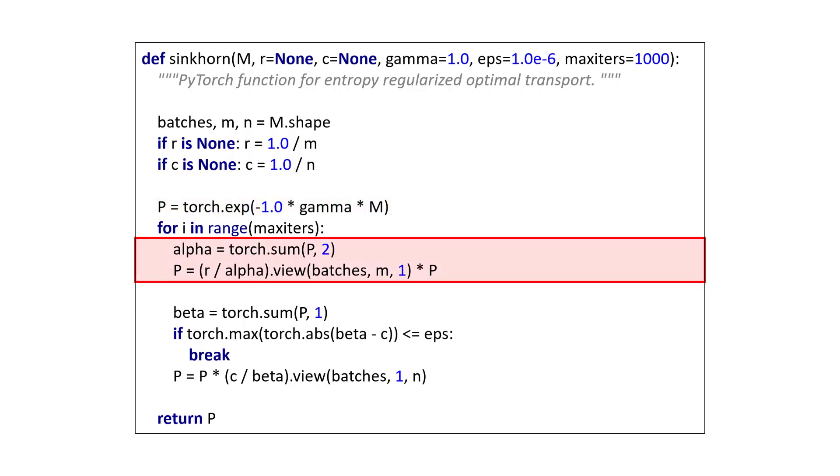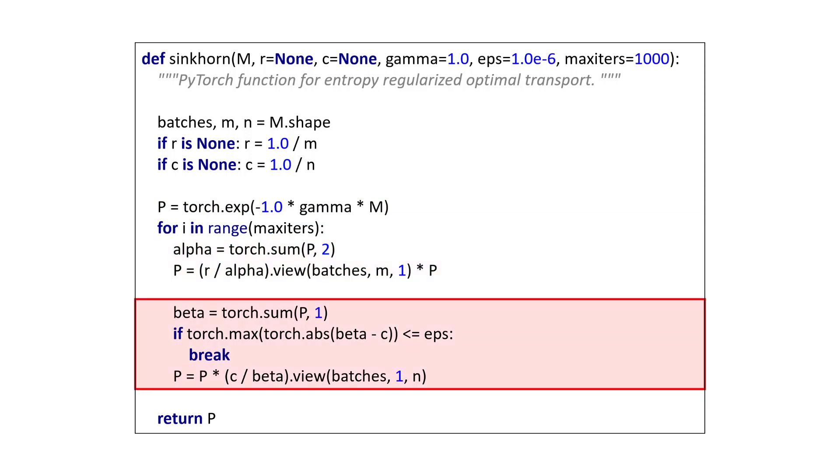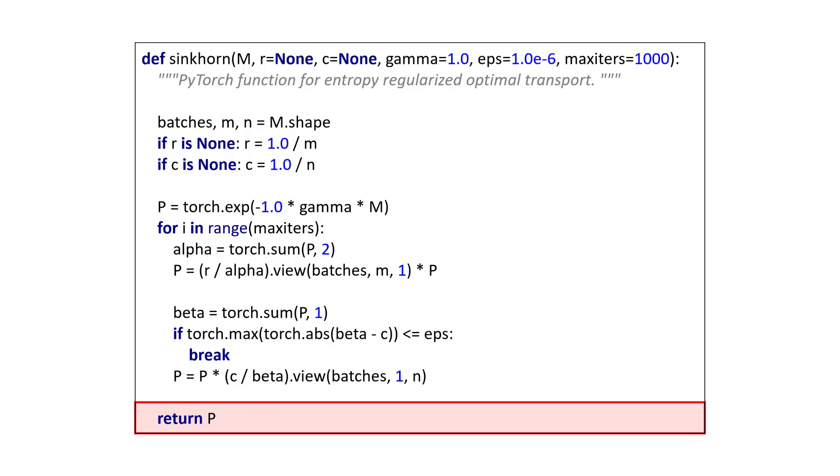Next, we perform row scaling, and then column scaling. We also check for convergence. And finally, we return P.